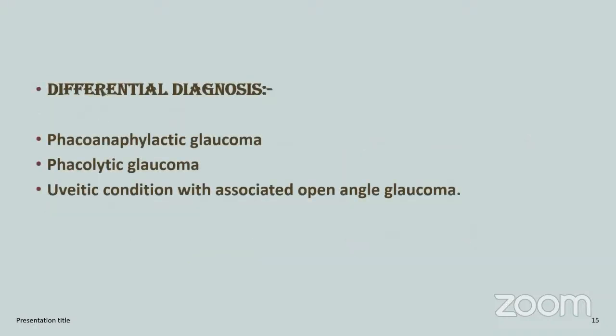Faculty asks how to differentiate between phacolytic and phacotoxic glaucoma. Student responds that KP is present on the endothelium in phacotoxic. Faculty clarifies: in phacotoxic there is residual lens material in the anterior chamber, whereas in phacolytic there is no residual lens material — the lens capsule is intact with wrinkles on the capsule. Student confirms. For uveitic glaucoma, there is a history of uveitis, KPs, and iris pigment over the lens and on the trabecular meshwork.